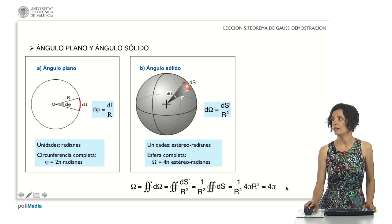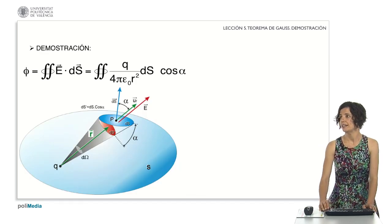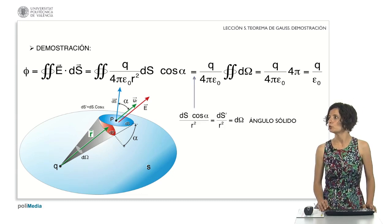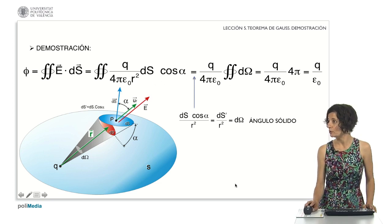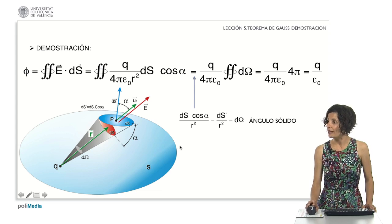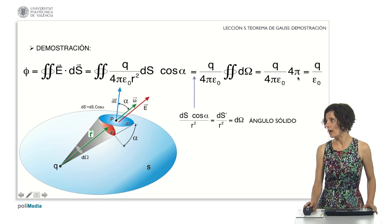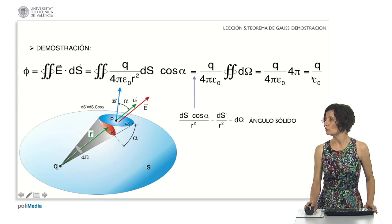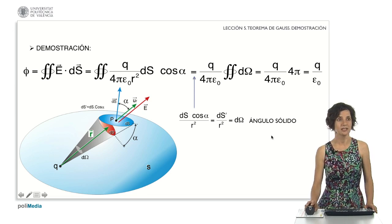Here below you have the demonstration. If in the above expression we replace the differential area times cosine of alpha divided by r squared with the differential of solid angle, we get a simplified expression. Since the integral over a closed surface of the solid angle differential equals 4 pi, we substitute and get the final result: the flux equals q divided by epsilon sub zero, just as we wanted to show.